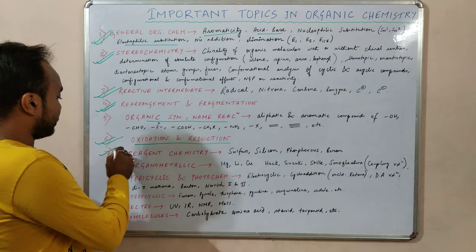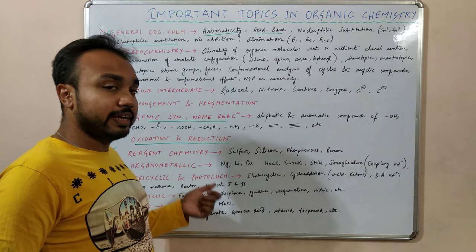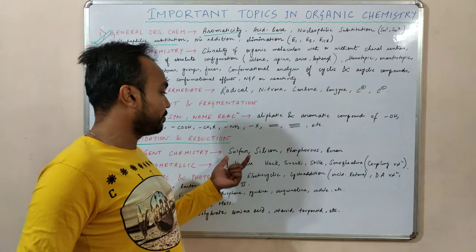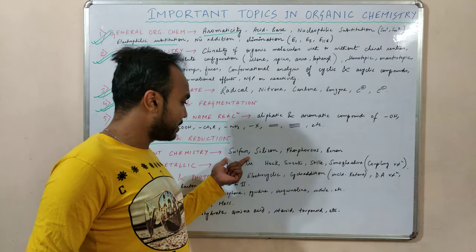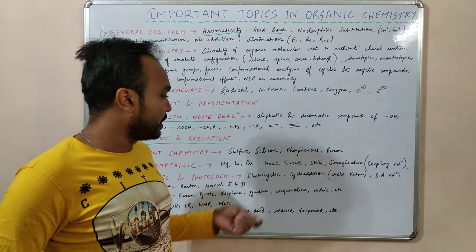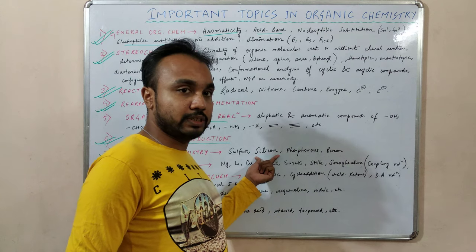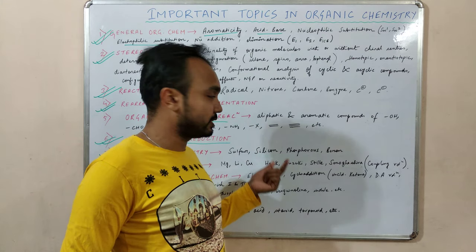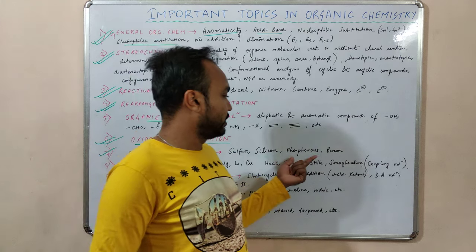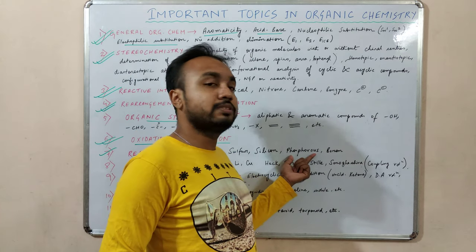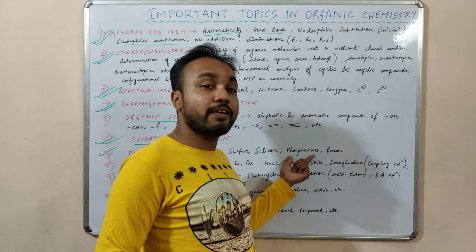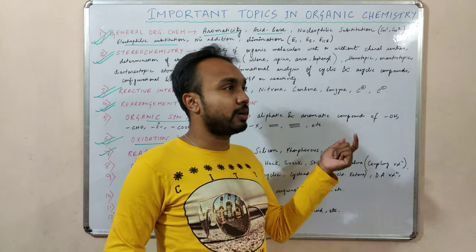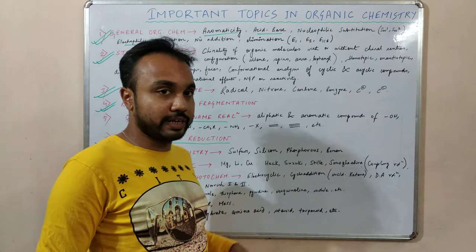Next comes reagent chemistry. In reagent chemistry we will talk about sulfur chemistry, like sulfonium ylides and sulfoxonium ylides. Then silicon chemistry — the beta-silicon effect, Peterson olefination, etc. Then phosphorus chemistry, like the famous Wittig reaction. Then in boron chemistry we will talk about hydroboration-oxidation and boron enolates.